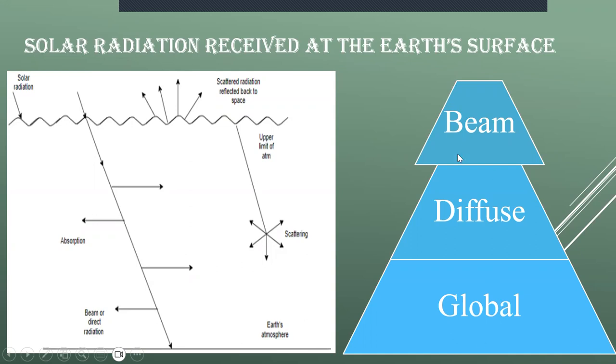Beam is otherwise known as direct radiation. The solar radiation received at the earth's surface without any change in the direction, that is, it is in line with the sun, then it is known as direct or beam radiation.